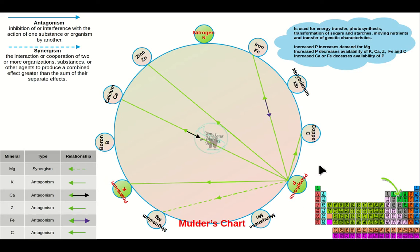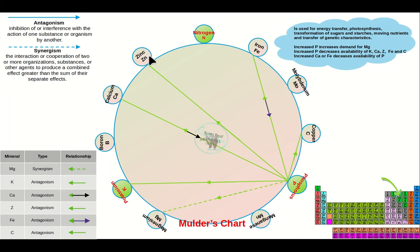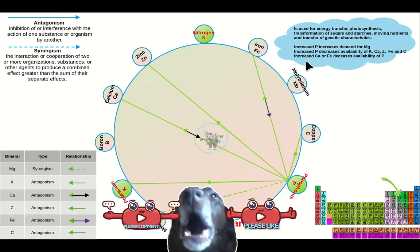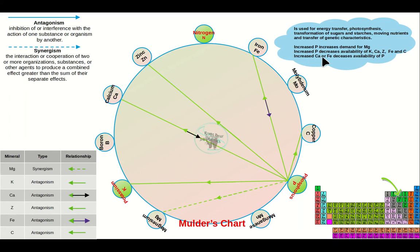Phosphorus, number 15 on the periodic table, is a very active one. It is used in energy transfer, photosynthesis, the transformation of sugars and starches, moving nutrients, and transferring genetic characteristics — meaning it's part of DNA. Increasing phosphorus creates a demand for magnesium and decreases the available amounts of potassium, calcium, zinc, iron, and copper. Conversely, increasing calcium or iron can lower the amount of available phosphorus.